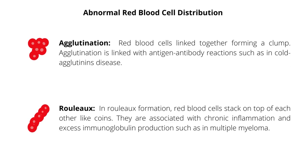Abnormal red blood cell distribution can also form, as seen in autoagglutination and rouleaux formation. In agglutination, red blood cells link together forming a clump. Agglutination is linked with antigen-antibody reactions, such as in cold agglutinin disease. In rouleaux formation, red blood cells stack on top of each other like coins. They are associated with chronic inflammation and excess immunoglobulin production, such as in multiple myeloma.